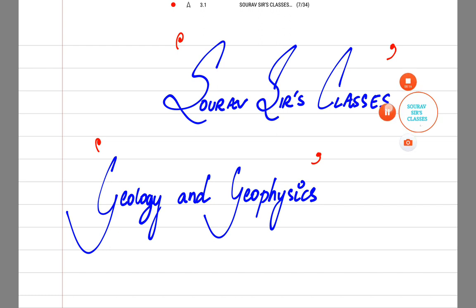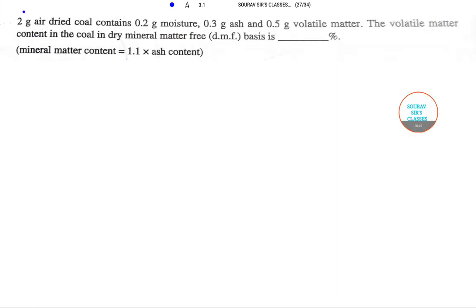The question reads as: 2 gram air dried coal contains 0.2 gram moisture, this amount of ash, and this amount of volatile matter. It is said that the volatile matter content in the coal in dry mineral matter free basis is, and we have to calculate this value in percentage.